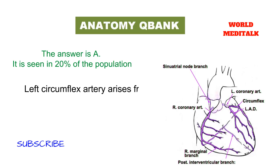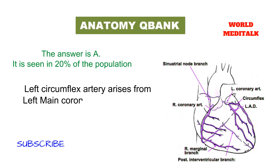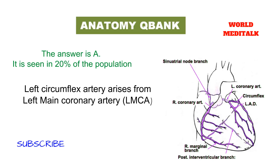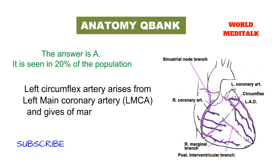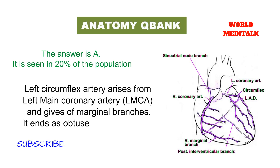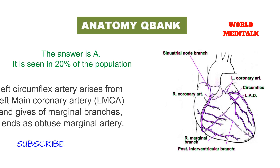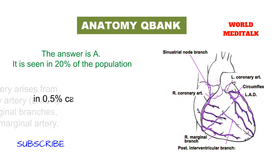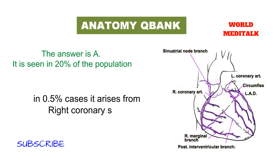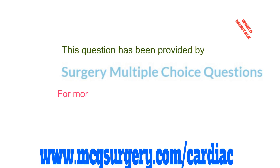The left circumflex artery arises from the left main coronary artery and gives off marginal branches, ending as the obtuse marginal artery. In 0.5 percent of cases, it arises from the right coronary sinus. This amazing brainstorming question has been provided by Surgery Multiple Choice Questions — the link is below.